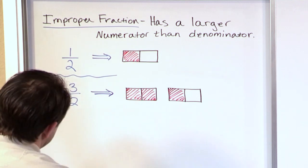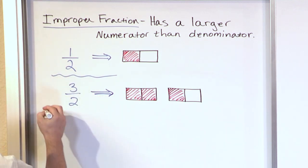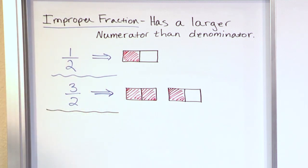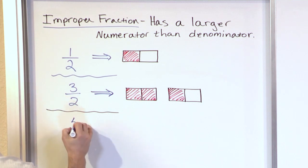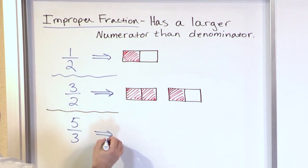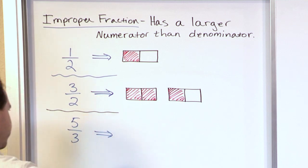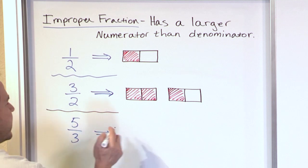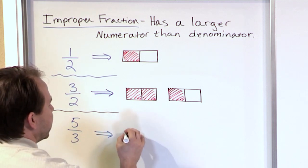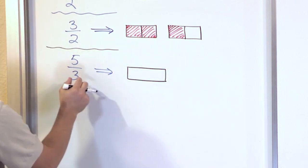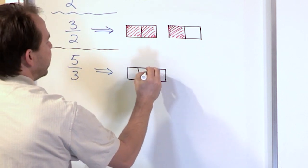Let's do another example. Let's say we have five-thirds of something. Again, it's improper — you can tell immediately because the top number is bigger than the bottom. That's really the most important thing from this lesson. But if we wanted to draw this and figure out what we have, let's do it in terms of candy bars again. Now we have a candy bar, and since the bottom number is three, we're dividing it into three pieces.